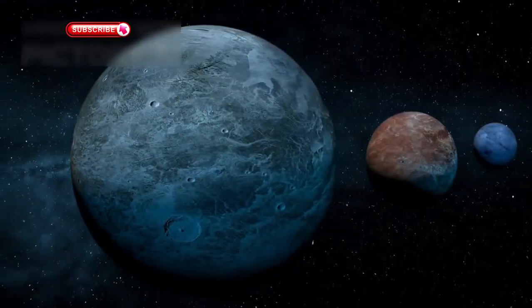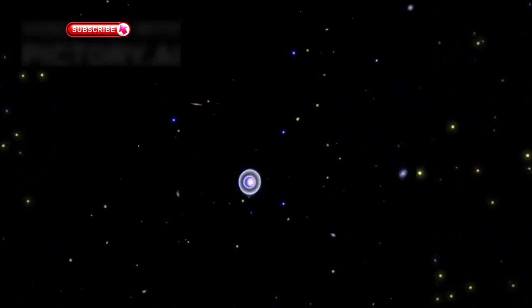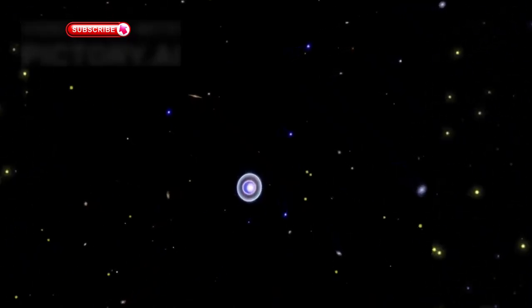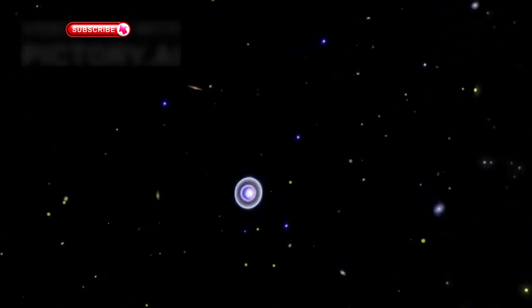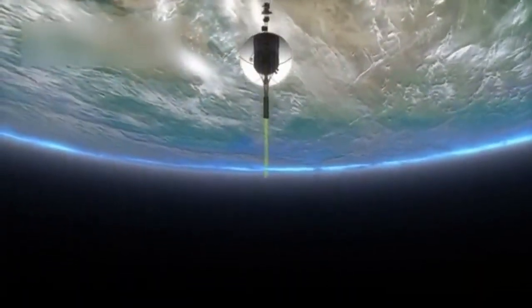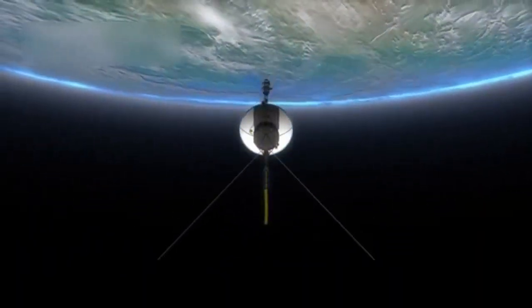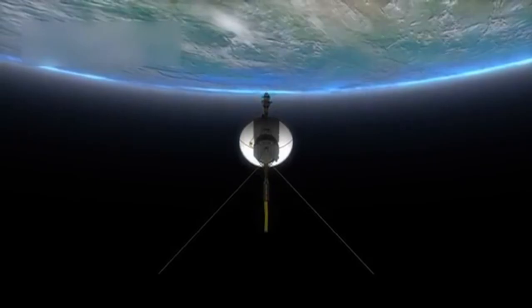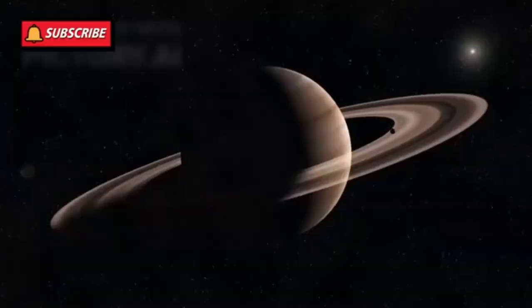Voyager 1, despite having only 69 kilobytes of onboard memory, continues to send back valuable data that is processed by powerful supercomputers on Earth. This stark contrast between outdated hardware and cutting-edge technology is almost poetic—an aging probe with vintage tech still teaching us about the cosmos with help from the most advanced tools on the planet.